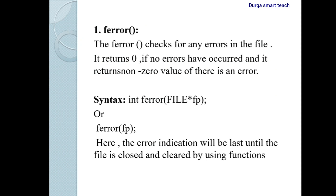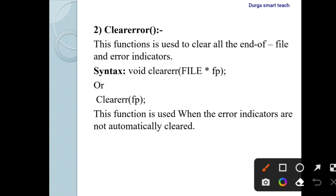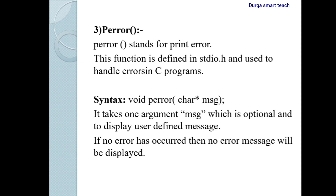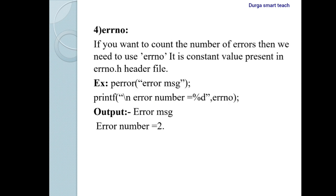The error handling functions are: ferror — used to check errors in the file; it returns zero if no errors occurred, and returns one (non-zero) if there are any errors. Next is clearerr — used to clear all the errors in the file. Next is perror — in the place of an error message, it prints the error message using the defined syntax. The last one is errno (error number) — used to count the number of errors present in the file while performing file operations.